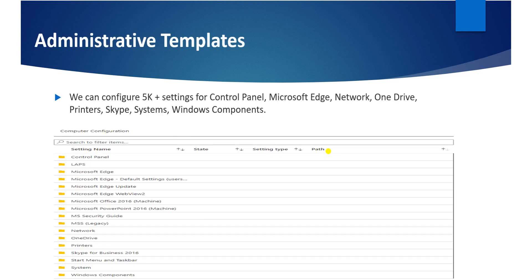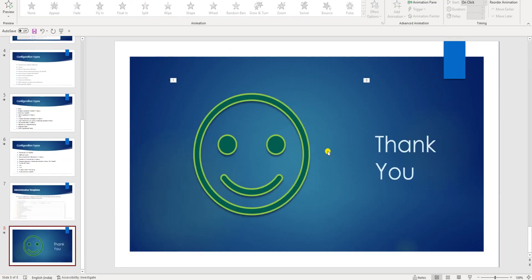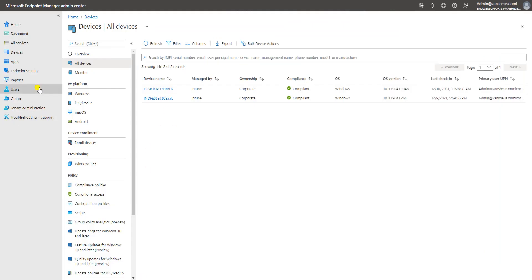Let me show you the administrative template. As I mentioned, in this video we are going to cover a demo for the administrative template. Here we can configure almost 5,000-plus settings for things like control panel, Microsoft Edge, network, OneDrive, printers, and Skype. It's a very wide range of settings we can create and deploy to end user machines. Let me go to my Intune console now.